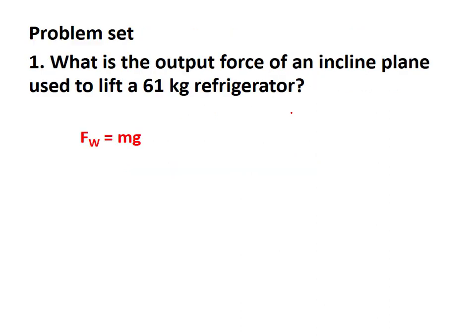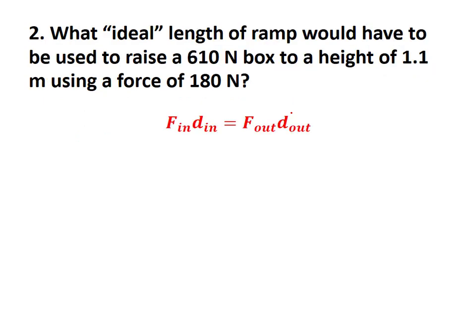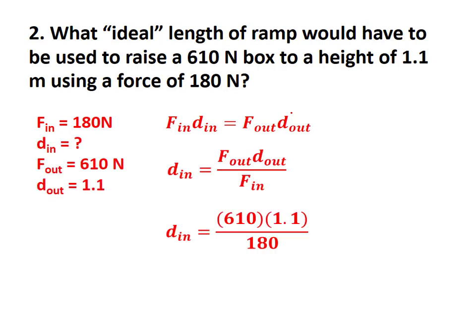Now for the problem set. A 61 kg object multiplied by 10 gives an output force of 610 N — that's what you'd have to lift without the machine. To find the ideal length of a ramp to raise a 610 N box a height of 1.1 m using a force of 180 N, plug into the ideal equation: distance_in = (F_out × d_out) / F_in = (610 × 1.1) / 180 = 3.73 meters.